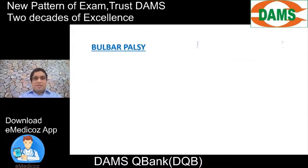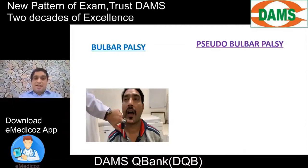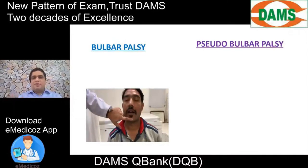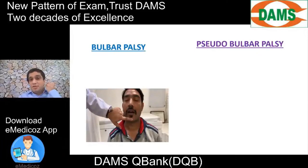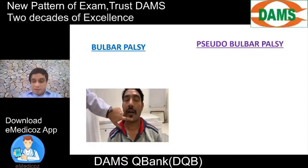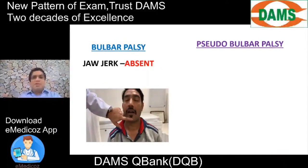Another difference is the jaw jerk. We tap the knee hammer onto the mandible. Normally the jaw jerk can be absent. In bulbar palsy, if the fifth cranial nerve nucleus in the pons is involved, the jaw jerk is absent — the sensory input enters pons via the fifth cranial nerve and the efferent does not go out. Nuclear lesions are LMN, so reflexes are absent. In pseudobulbar palsy, the lesion is suprapontine — supranuclear UMN — so the jaw jerk is brisk; the patient strongly clenches their teeth.